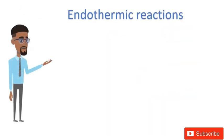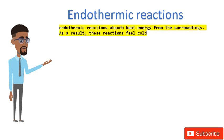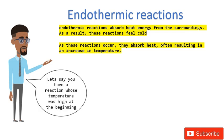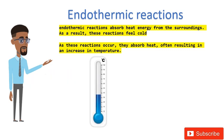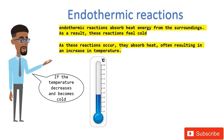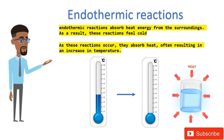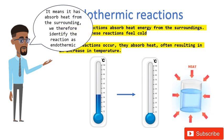Now let's take a look at Endothermic Reactions. Endothermic Reactions absorb heat energy from the surroundings. As a result, these reactions feel cold. As these reactions occur, they absorb heat, often resulting in a decrease in temperature. Let's say you have a reaction whose temperature was high at the beginning. If the temperature decreases and becomes cold, it means it has absorbed heat from the surrounding. We therefore identify the reaction as endothermic.